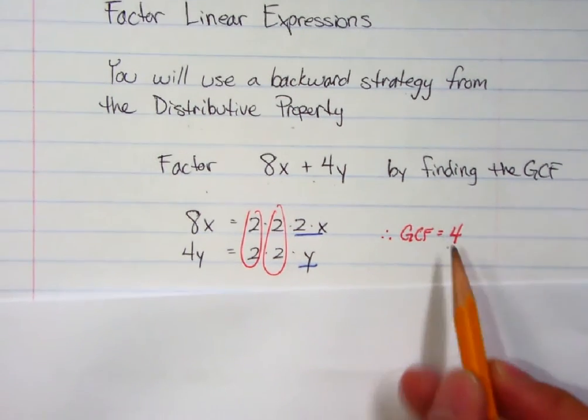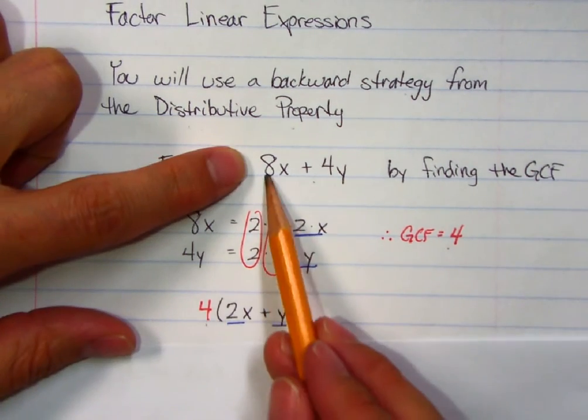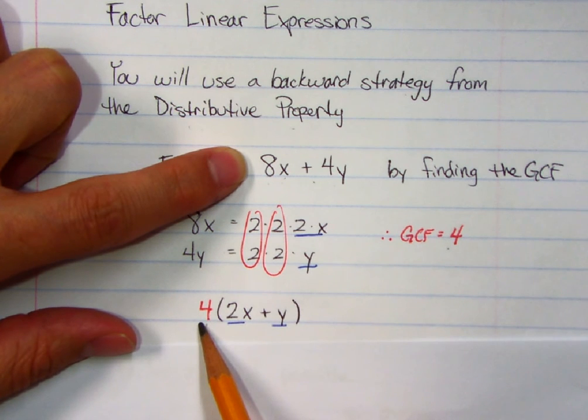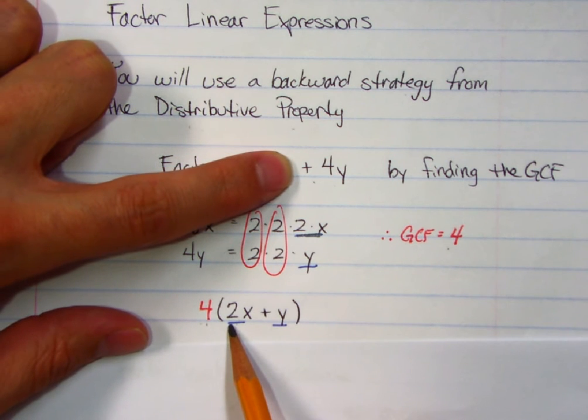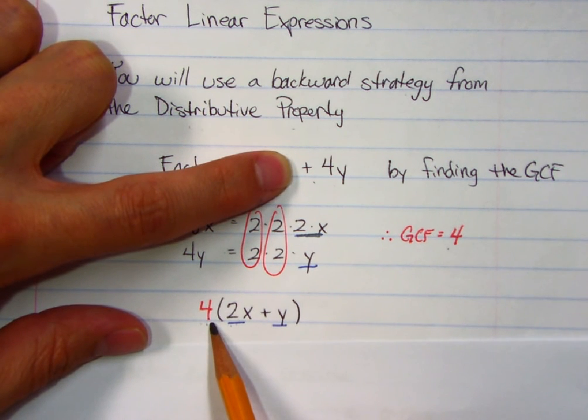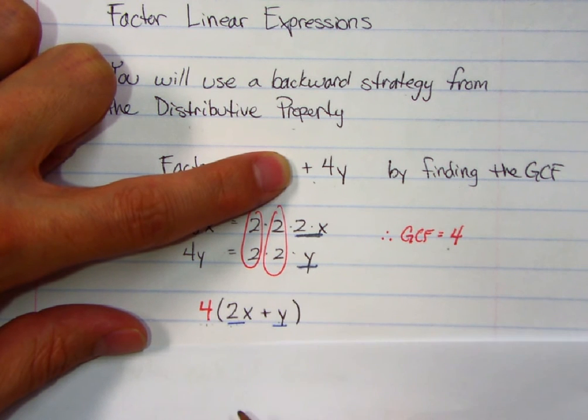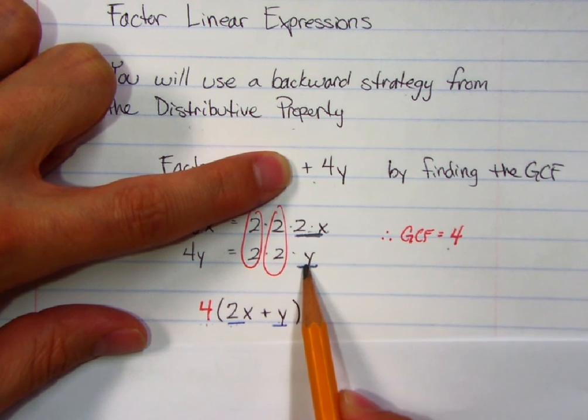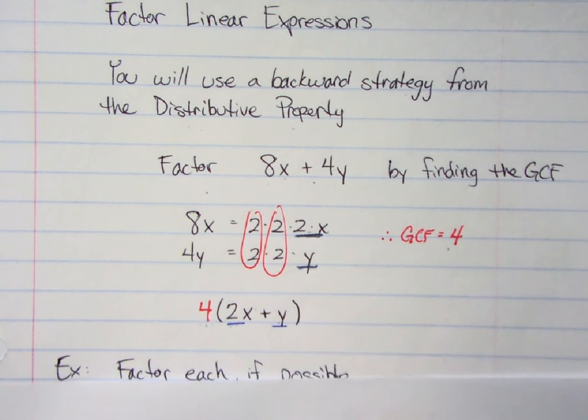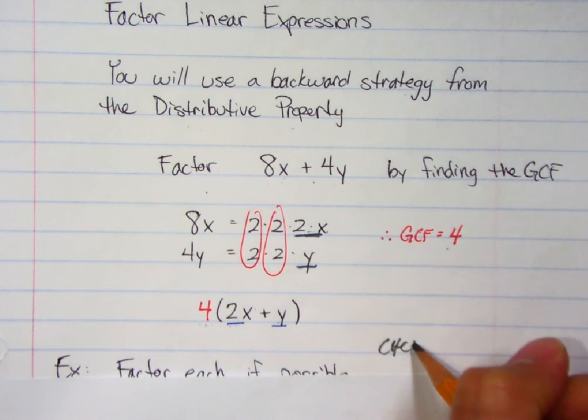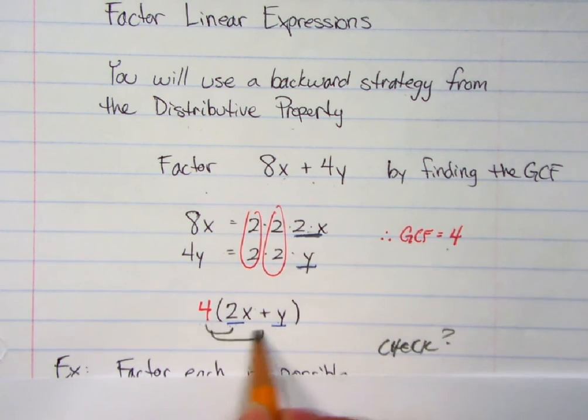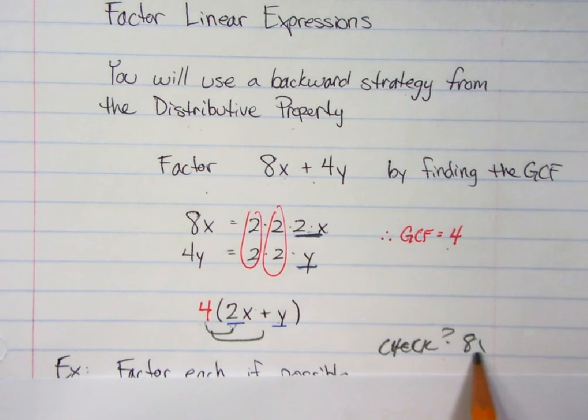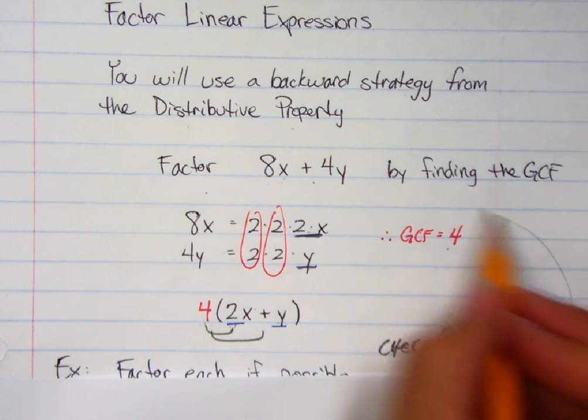Okay, so they have a 4 in common. If I pull out a 4, think about this. 8x divided by 4 leaves you with 2x. 4y divided by 4 should leave you with y. Take a look. That's the only thing that didn't circle there. So 2x and a positive y. That's the inside. If you want to double check your work, you can check it quite easily. If I go back, 4 times 2 is 8, and then there's the x. 4 times y is 4y. And if you notice, that is your original problem.